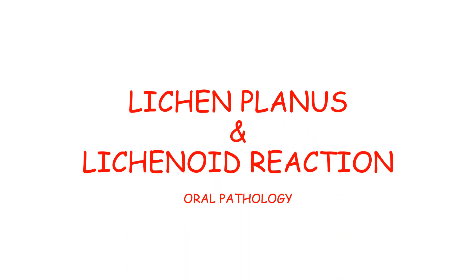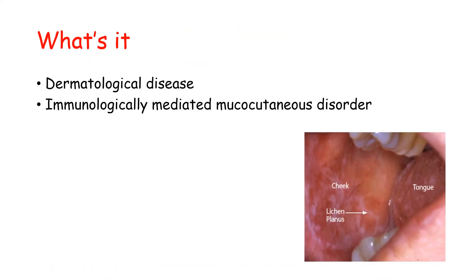Today our topic is lichen planus and lichenoid reactions. Lichen means mosses and planus means flat, so lichen planus refers to moss-like flat eruptions on skin or mucous membrane. It is basically a dermatological disease and an immunologically mediated mucocutaneous disorder.